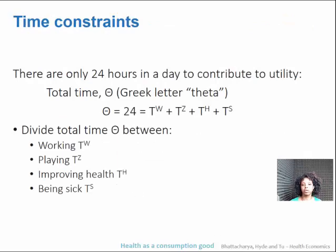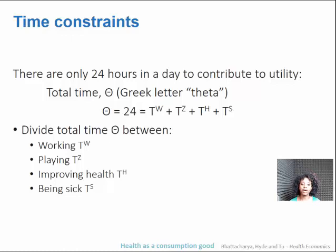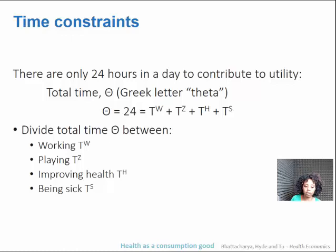The constraint in this model is time. You only have 24 hours in a day to allocate between working, playing, improving your health, and being sick. Total time is denoted by theta. Theta equals 24 — 24 hours in a day — and that's divided between time spent working, time spent playing, time spent being healthy, and time spent being sick or investing in your health.